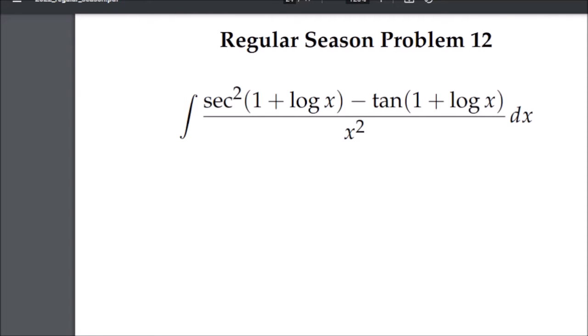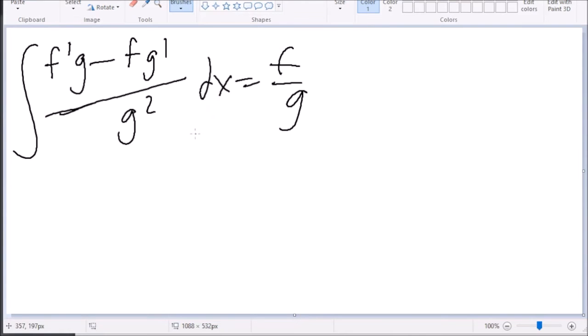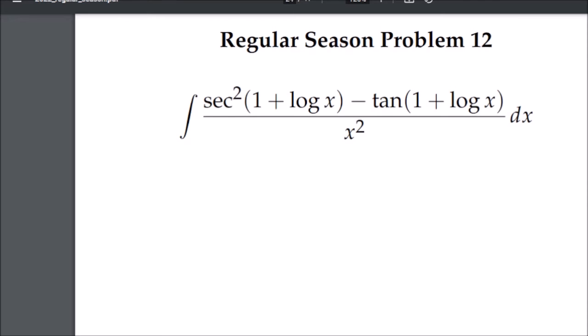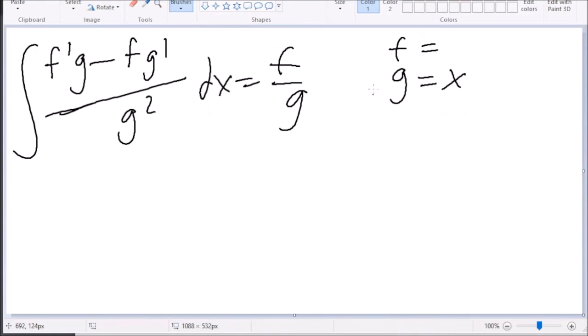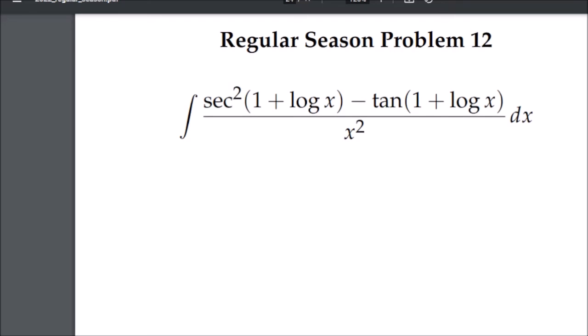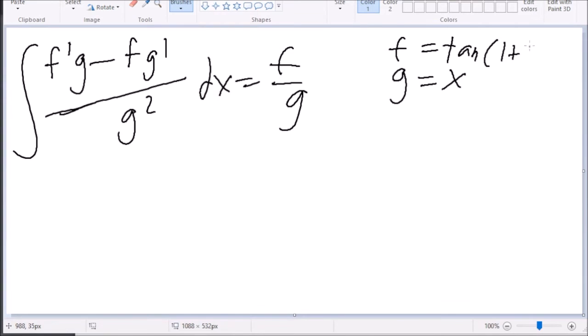So let's experiment. To do reverse quotient rule, I'm going to assume that g is equal to x. So maybe g might be x, so this is just a guess. And my other guess is that f is equal to, well, this is f prime, secant squared 1 plus ln of x, so f might be tangent of 1 plus ln of x.